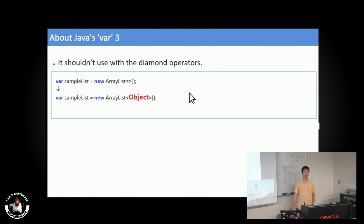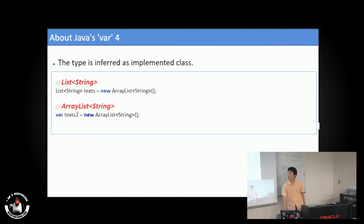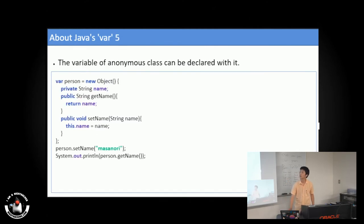You should take care about what type is inferred, because sometimes the type differs from your expectation. Like this and this. And it can be degraded for anonymous classes.